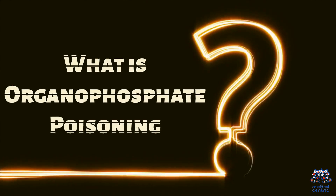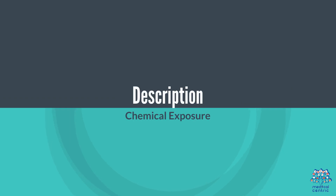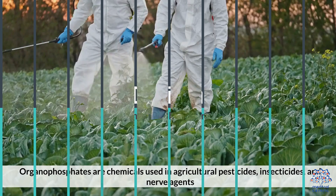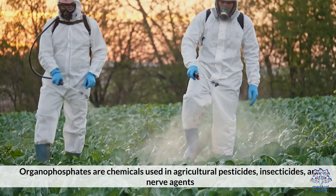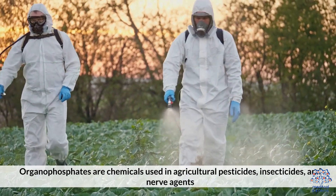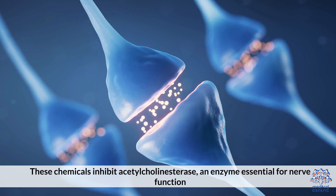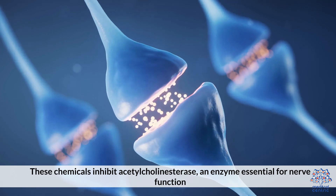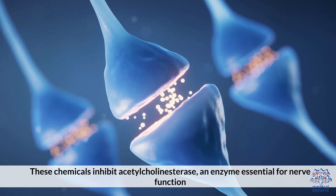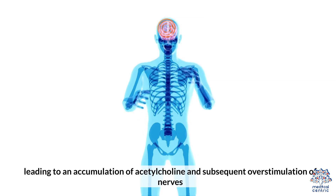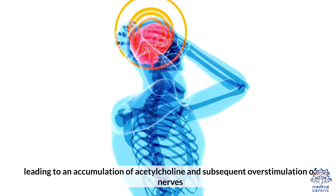What is Organophosphate Poisoning? Organophosphates are chemicals used in agricultural pesticides, insecticides, and nerve agents. These chemicals inhibit acetylcholinesterase, an enzyme essential for nerve function, leading to accumulation of acetylcholine and subsequent overstimulation of nerves.